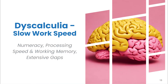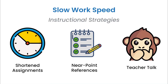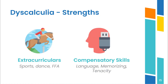Similar to dyslexia, we see students with slow working speed due to their lack of numeracy, processing speed, working memory, and extensive gaps in semantic knowledge. Watching these students process can feel as slow as dial-up and as severe as communicating through Morse code. Again, give shortened assignments and those near-point references to help reduce load on working memory, and make sure you're limiting teacher talk to reduce what's coming into working memory. Provide processing pauses for these students. Research studies seeking to find strengths tied to dyscalculia have failed, possibly partly due to broad definitions of dyscalculia. This doesn't mean our students don't have strengths, but there isn't any specific strength that usually comes with dyscalculia.